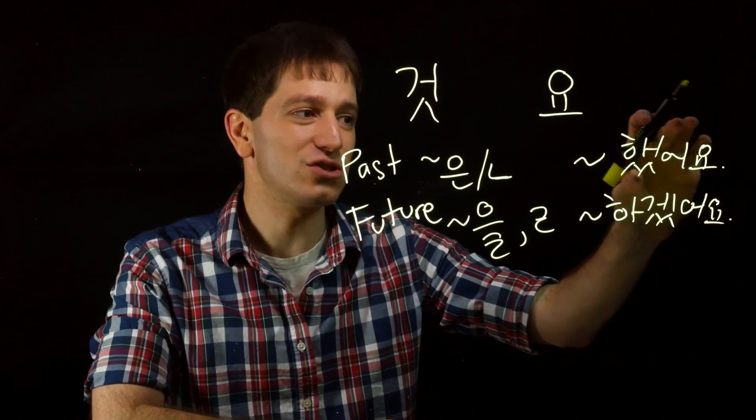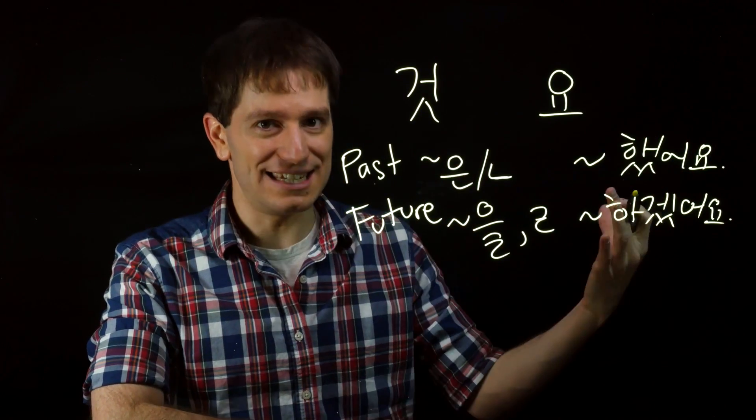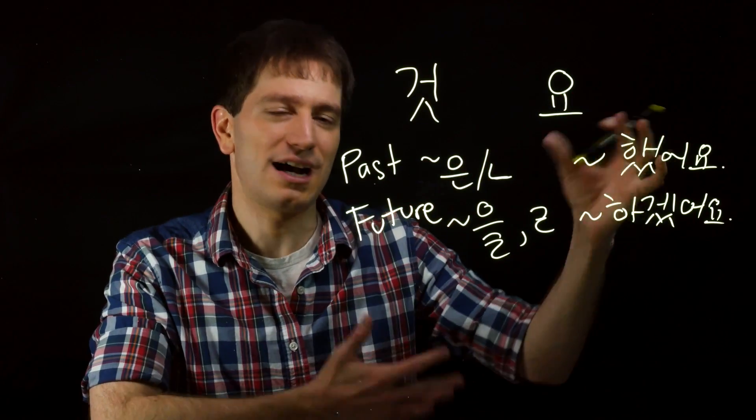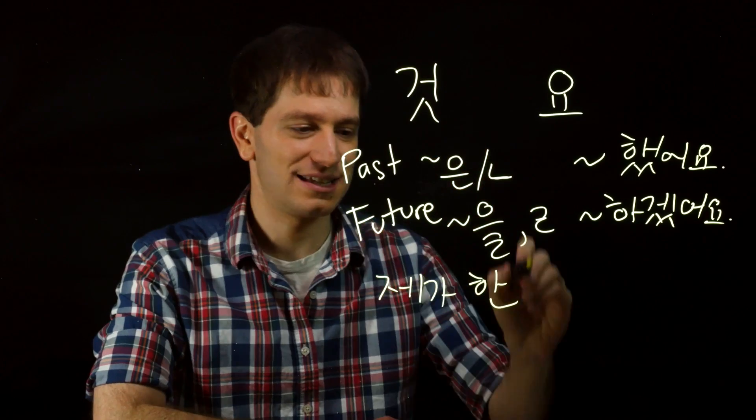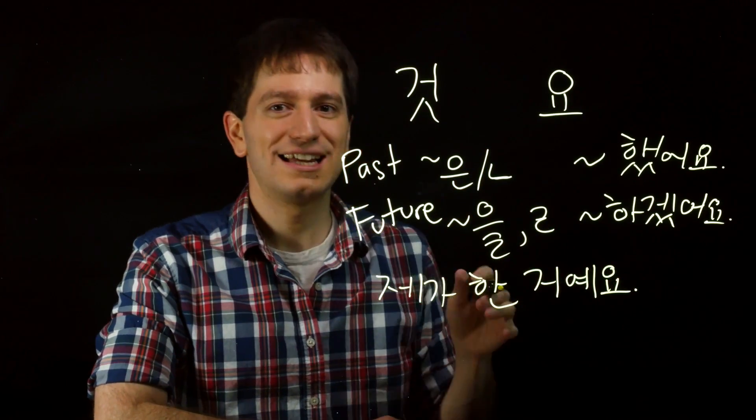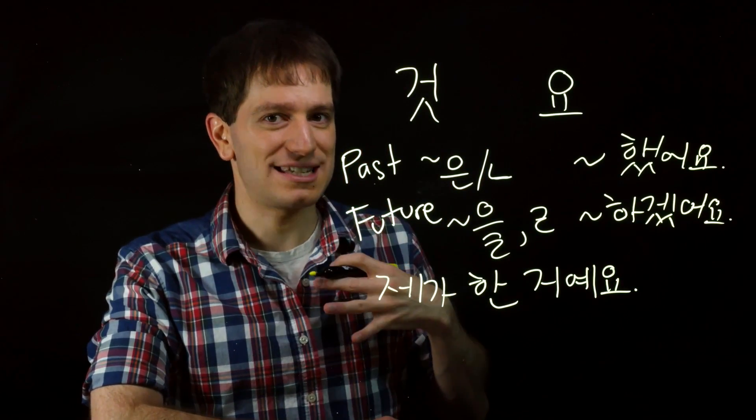So if you were to say 했어요, that means I did it, with emphasis on the verb here, 하다. And if you were to say 제가 한, using the past tense, 거예요, that would mean more like I did it in the past tense.